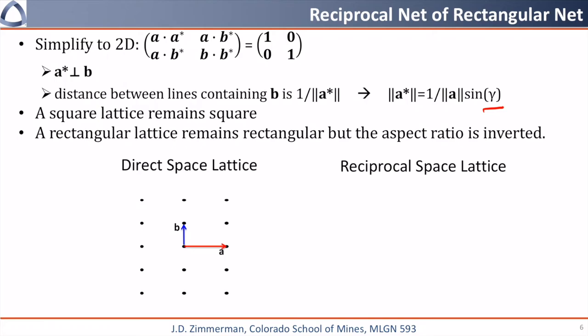Now I'm showing the direct space lattice on the bottom left, and I'm defining the two lattice translation vectors a and b. A star is going to be perpendicular to b, and the distance between planes is going to be the magnitude of 1 over a star.